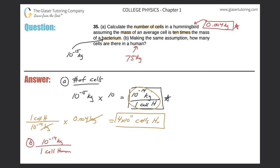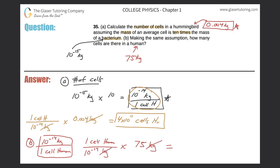Now I can do the same thing as before — I need to flip this ratio because I need cells in the numerator. One cell of a human weighs 10 raised to the negative 14 kilograms. Taking that and multiplying by the average mass of a human, the kilograms cancel, leaving me with cells in a human. So 75 divided by 10 raised to the negative 14 comes out to a tremendously large number — about 7.5 times 10 raised to the 15. That would be the approximate number of cells in a human.